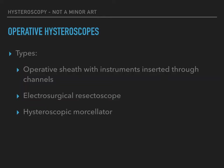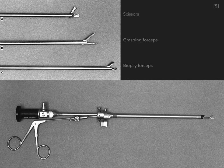Operative hysteroscopes are used to remove endocervical or endometrial lesions, like submucosal myomas and endometrial polyps, or to perform endometrial ablations. There are three types of operative hysteroscopes: an operative sheath with instruments inserted through channels or fixed to the sheath, an electrosurgical resectoscope, and a hysteroscopic morcellator. These flexible and semi-rigid instruments range in diameter from 2 to 3 mm and are inserted through an operating channel in the sheath. Some systems have sheaths which use suction to retrieve tissue fragments without removing the hysteroscope.